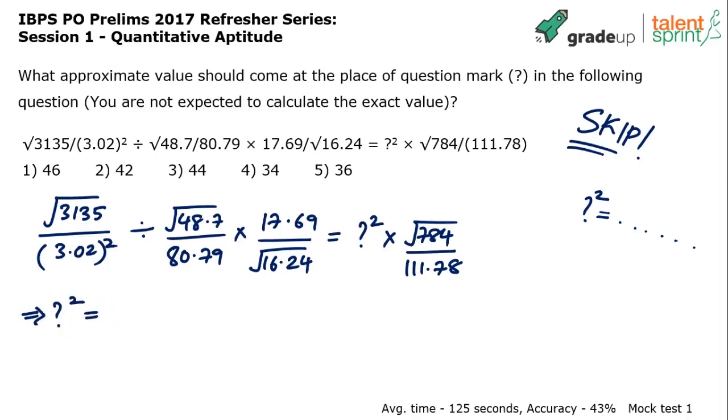So what I would do now is question mark square is equal to, this would mean that you would have practiced a lot, right? You must be good in numbers. I know I am better of replacing 3135 as 3136, approximately 3136. I'll tell you why we are taking as 3136 later, but let's just change it. So 3135 is 3136, 3.02, let's take it as 3, 3 square.